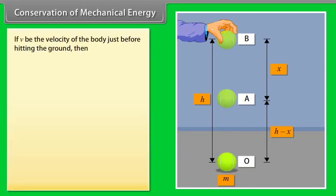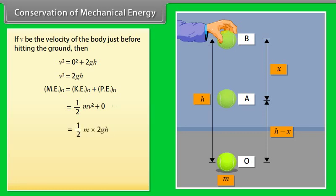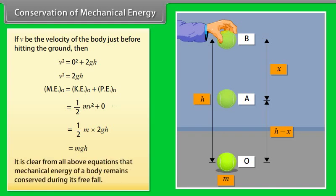If v be the velocity of the body just before hitting the ground, then v square equals 2gh. Here mechanical energy of the body at o is equal to kinetic energy of the body at o plus potential energy of the body at o. By calculating it, we get mechanical energy of a body at o is mgh. It is clear from all above equations that mechanical energy of a body remains conserved during its free fall.